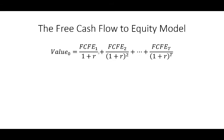You keep doing that for all the free cash flows to equity. As you go out to the second year, you divide by one plus R squared — even more discounted because it's two years out. You keep doing that all the way to infinity, to big T, which is the end of the company's life. That will be the value of the company — just add up all those free cash flows to equity.